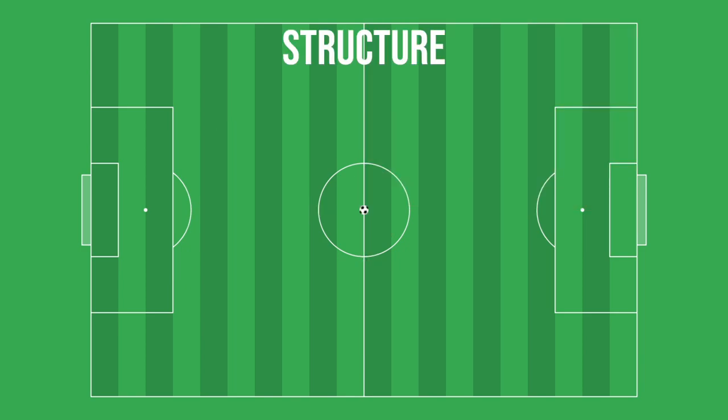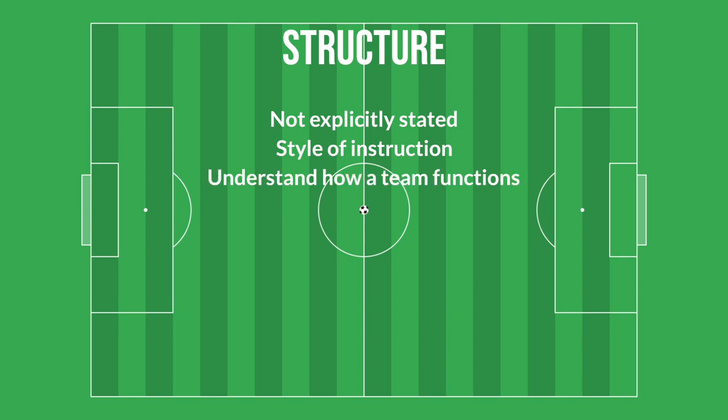Remember that it's highly unlikely a coach will explicitly state that they are using a rigid or fluid structure, because it's more a style of instruction than an instruction itself. While no team will use a completely rigid or completely fluid structure, describing a team's structure helps to understand how a team operates, since structure gives a functional definition of the spacing of players in a given situation. The type of structure a coach implements should be formed around the individual players and the coach's personal philosophy, but in the end, the player's execution is what will define a team's structure.